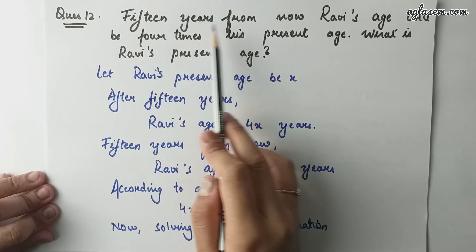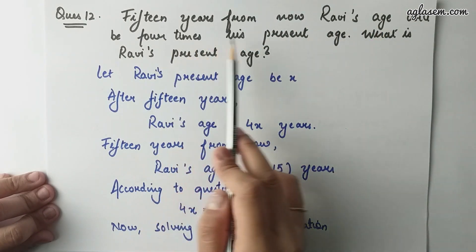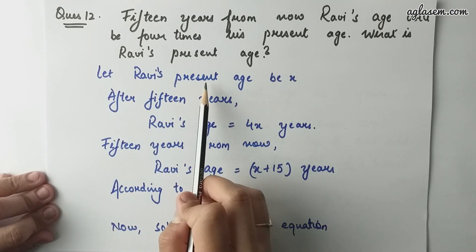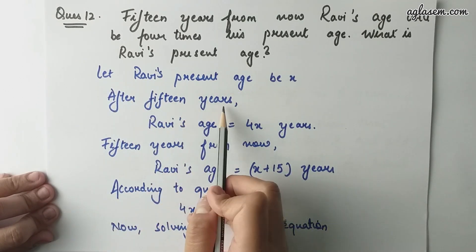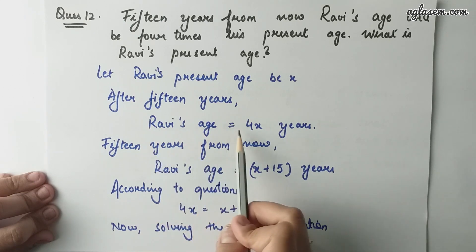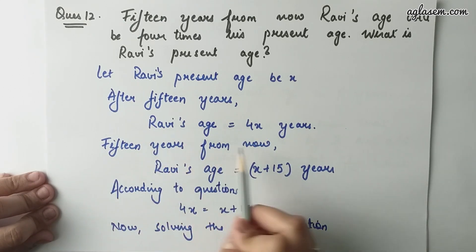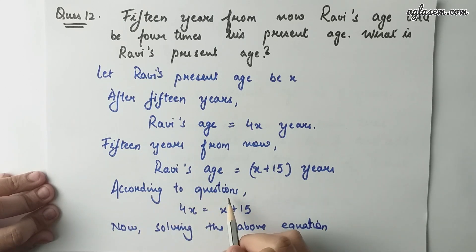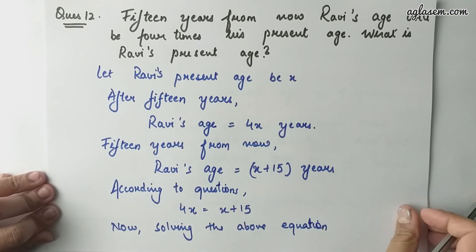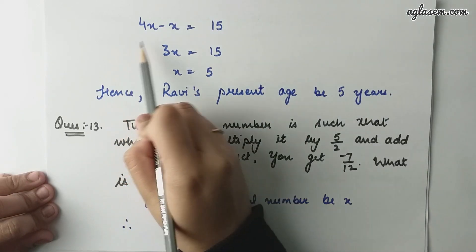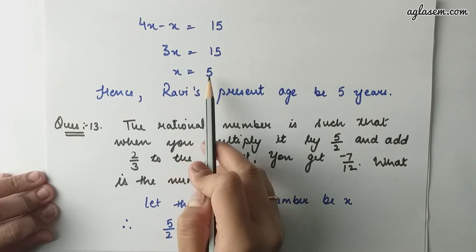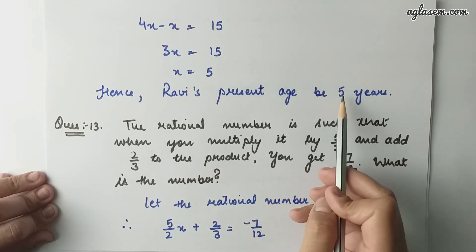Question number 12: 15 years from now, Ravi's age will be 4 times his present age. What is Ravi's present age? Let Ravi's present age be x. After 15 years, his age will be x plus 15 years, and according to the question this equals 4x. So 4x equals to x plus 15, giving 4x minus x equals to 15, then 3x equals to 15 and x equals to 5. Hence, Ravi's present age is 5 years.